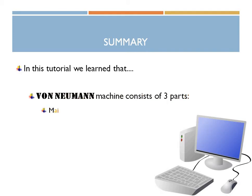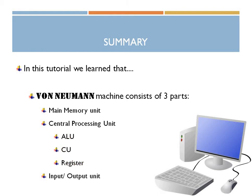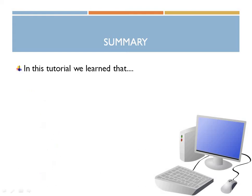To summarize everything we have learned in this tutorial: the Von Neumann machine consists of three parts — main memory, central processing unit, and input/output unit. The CPU consists of the ALU, which stands for arithmetic and logic unit, the CU which stands for control unit, and registers, which are small buffer storages inside the CPU.